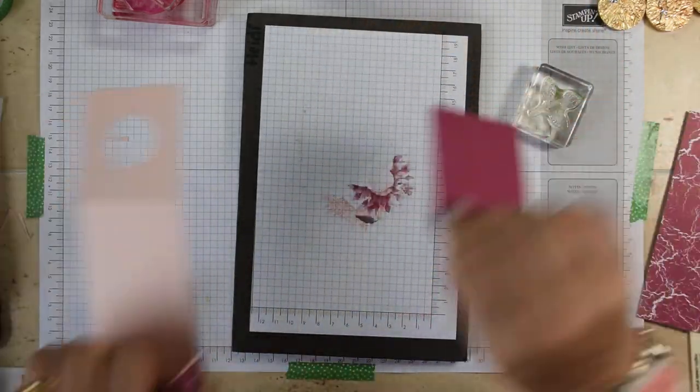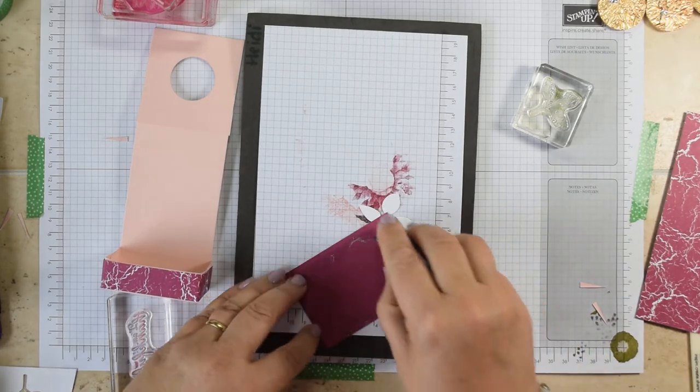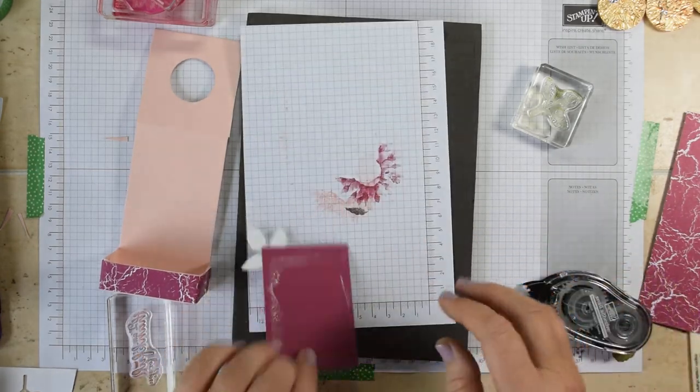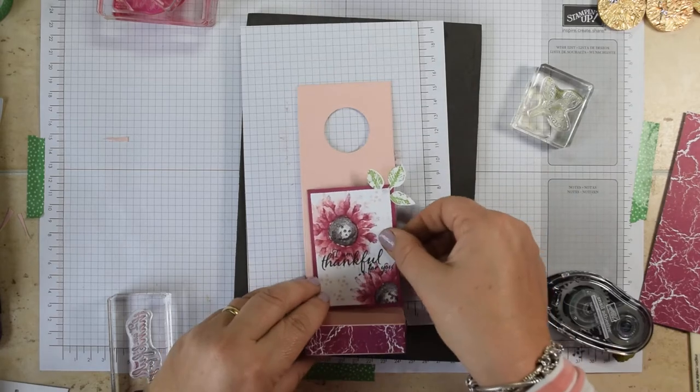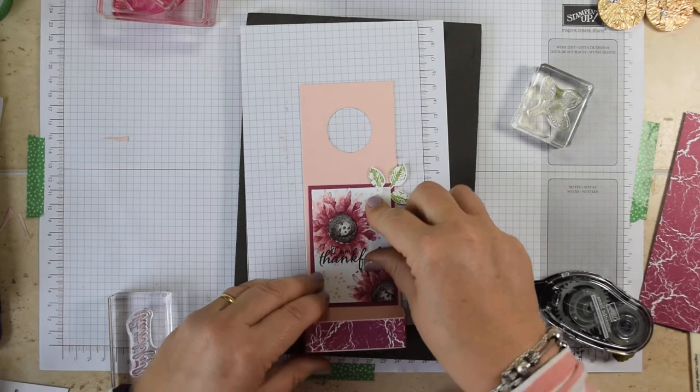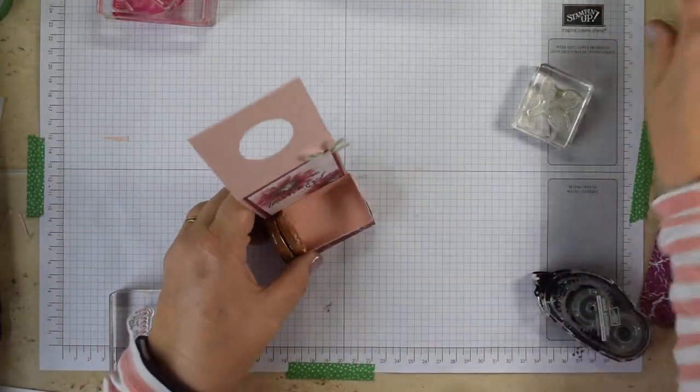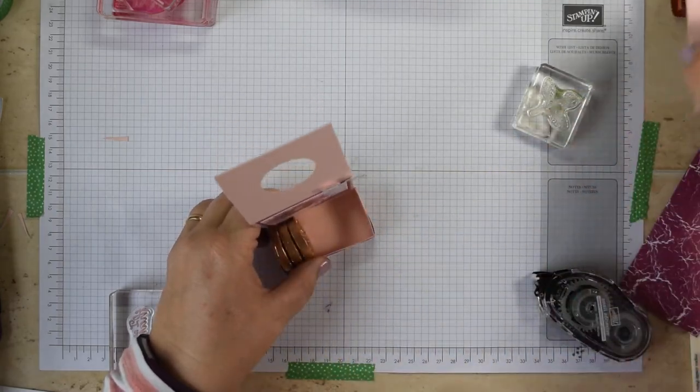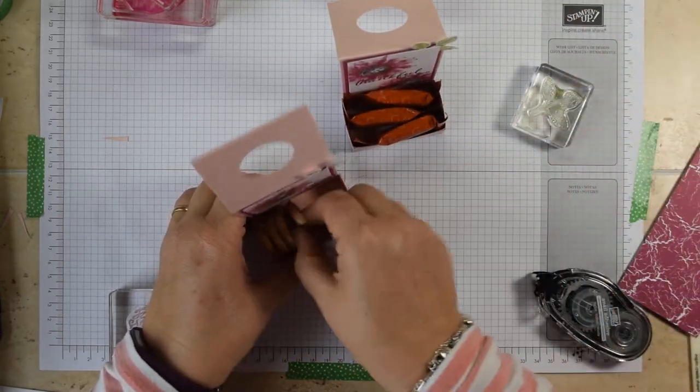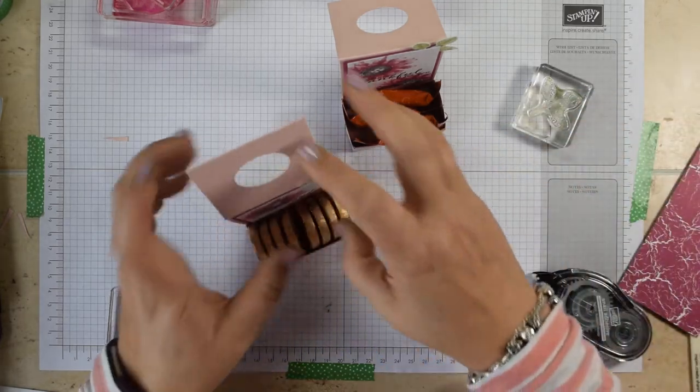And then all you need to do is just layer that up the top of the back onto the back panel, and there you have something that is ready for you to fill with some little chocolates to say thank you very much to a friend for being there for you.